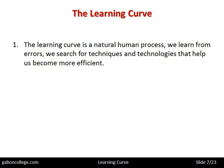The learning curve is a natural human process. We learn from errors. We search for techniques and technologies that help us become more efficient. This is what we've done since we lived in caves — we've always been looking for better ways of living, better ways of acquiring food and shelter, from very primitive times right up to now. We're still looking for better ways to perform tasks, more efficient ways of living and working. So it's not new to the human condition — we do this automatically, and when we make mistakes, we learn from them.